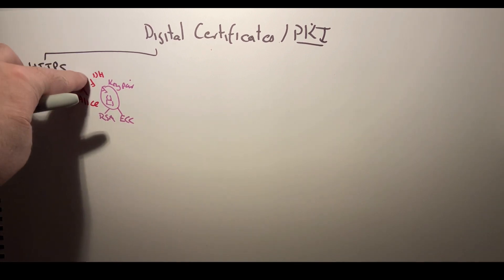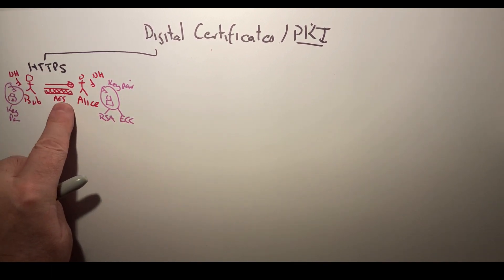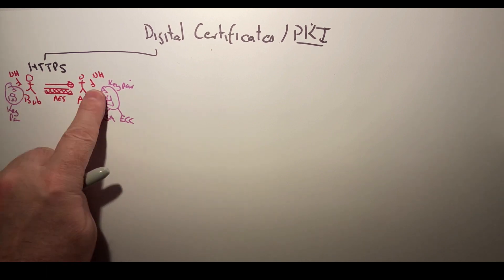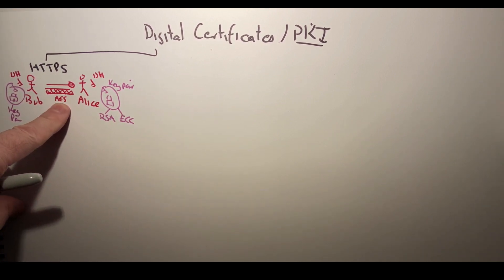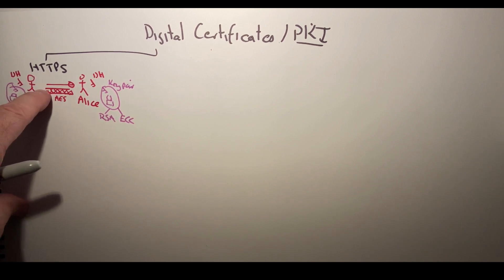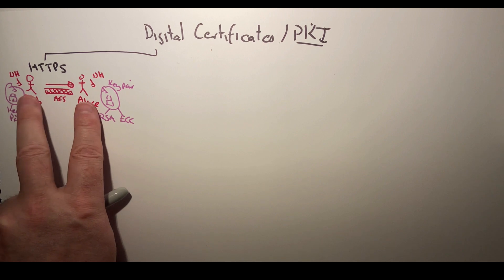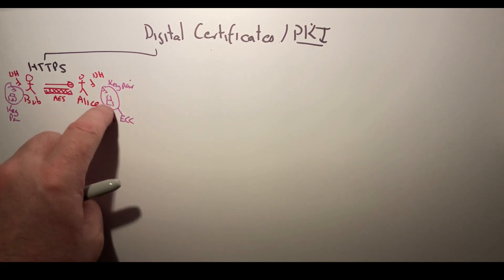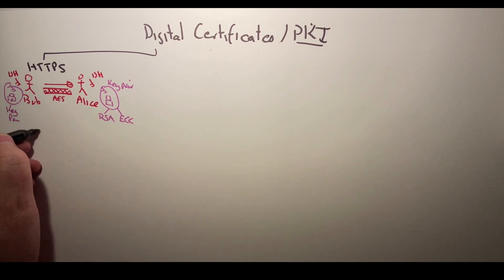We have Diffie-Hellman for the key exchange that generates a shared key, and we will use a symmetric key algorithm such as AES to create the tunnel between them. But how do Bob and Alice make sure that they can identify each other? They do this through a key pair.